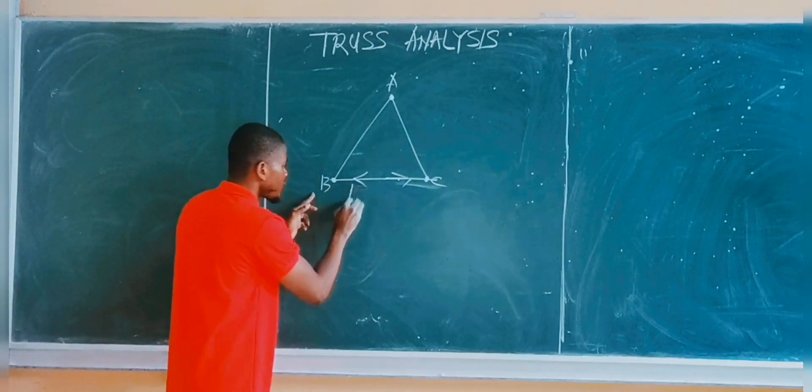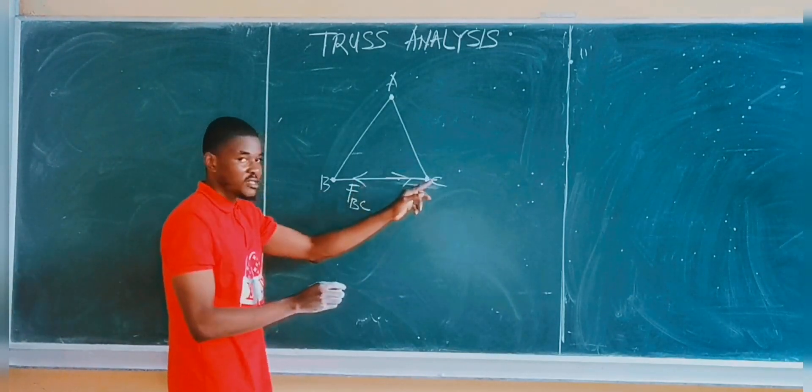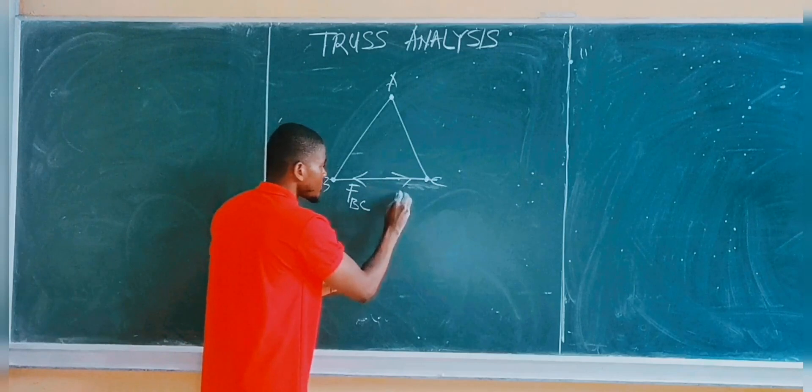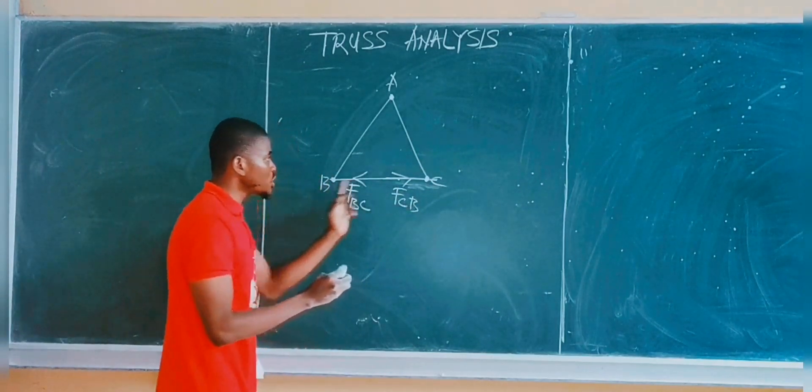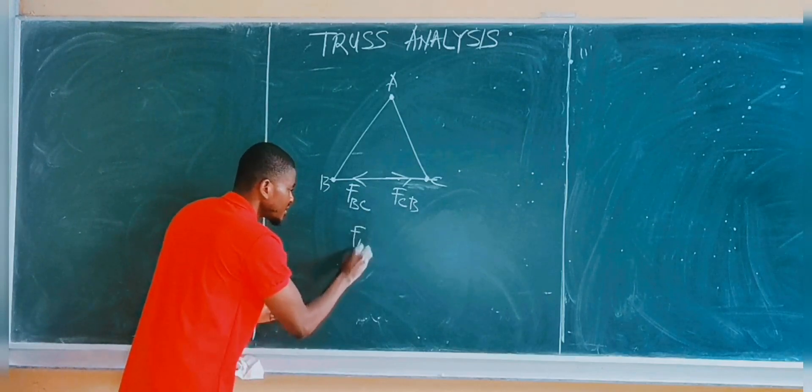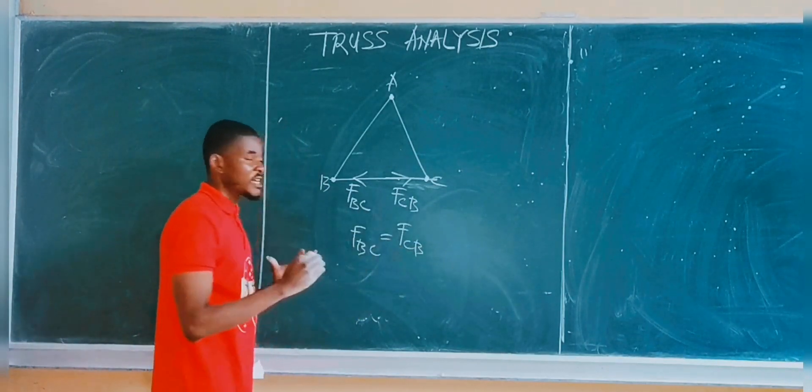We can call this force the force at joint B relative to joint C. Meanwhile, we can call this force the force at joint C relative to joint B. But these two forces, FBC is the same thing as FCB. The two forces are the same.